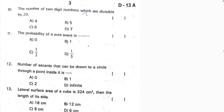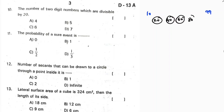Next: how many two-digit numbers are divisible by 20? Two-digit numbers range from 10 to 99. The numbers divisible by 20 are: 20, 40, 60, 80 — that's four numbers. Correct option is A.